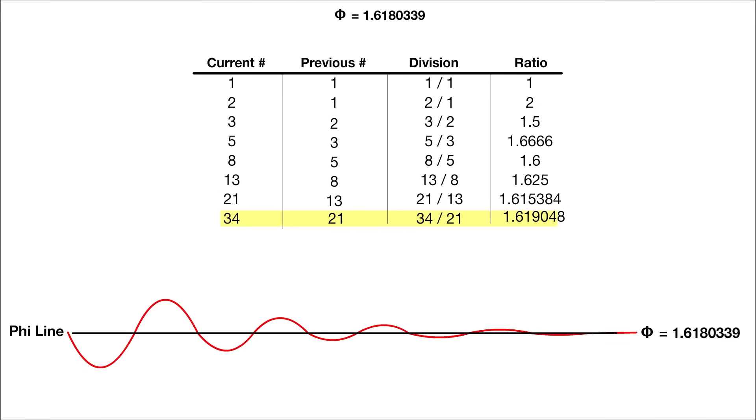It continually oscillates over and under the Phi ratio, never quite making it there, but continuing on closer and closer every time until eventually you can't even tell the difference. Because Phi is an infinite number, this sequence will go on forever.